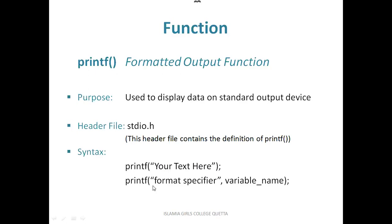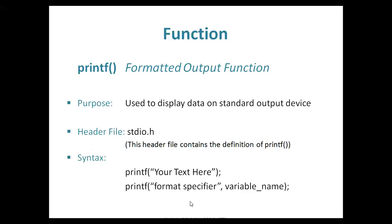printf is a formatted output function and is also used for displaying data in different formats — you can display an integer, character, or floating point value. The syntax requires you to write the format specifier inside the double quotations (we will study format specifiers in the next chapter), then put a comma, then write the variable name whose value you are displaying to the user, and finally put a semicolon. Basically, whatever you write inside the double quotations is displayed to the user.